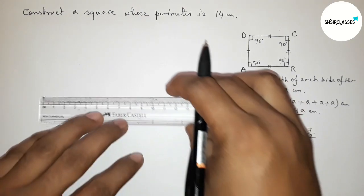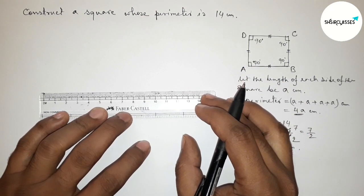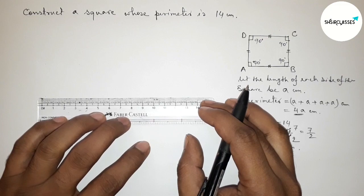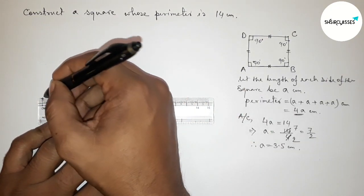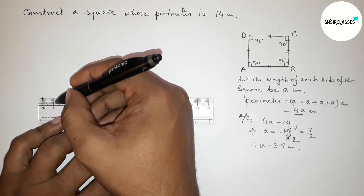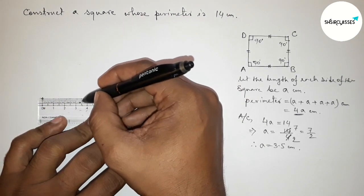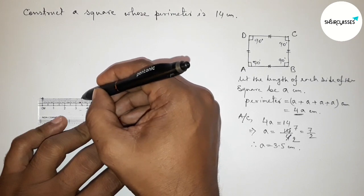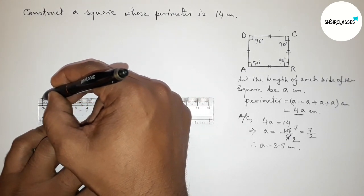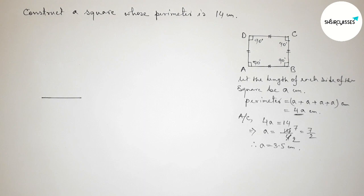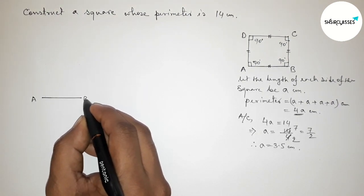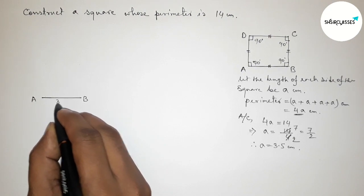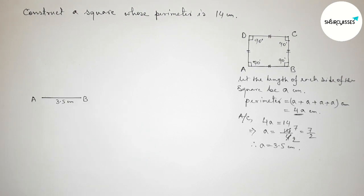First, drawing a line segment of length 3.5 centimeters — 1, 2, 3, and this is 3.5 centimeters. Taking point A at one end and point B at the other end, so AB is a 3.5 centimeter line segment.